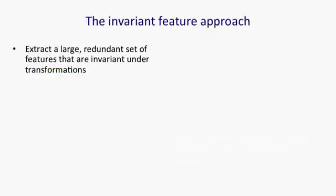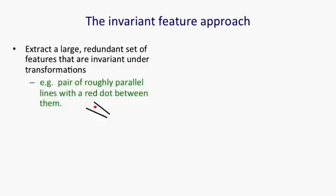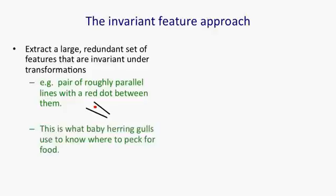The invariant feature approach says you should extract a large and redundant set of features, and they should be features that are invariant under transformations like translation, rotation, and scaling. Here's an example of an invariant feature: a pair of roughly parallel lines with a red dot between them. That's actually been suggested as the feature that baby herring gulls use for knowing where to peck for food. If you paint that feature on a piece of wood, they'll peck at the appropriate place on the piece of wood.